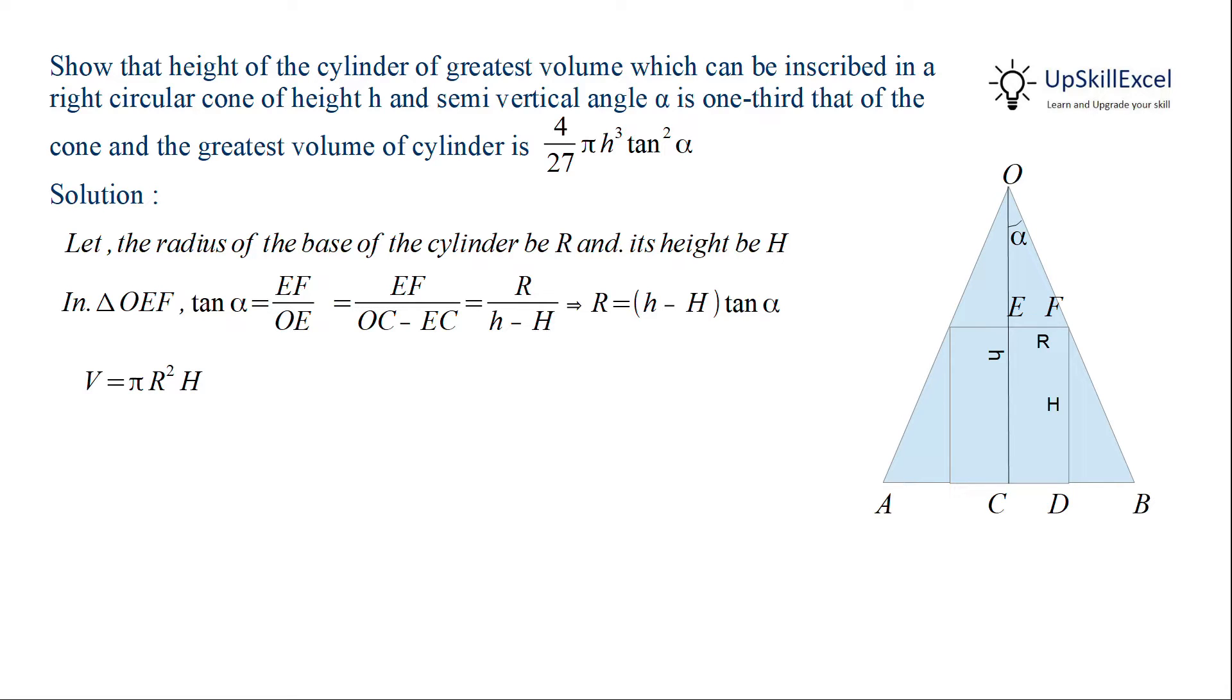Now we know that the volume of the cylinder is equal to pi r square H. Substituting r obtained above, we get volume is equal to pi multiplied by height of the cylinder multiplied by height of cone minus height of cylinder whole square multiplied by tan square alpha.